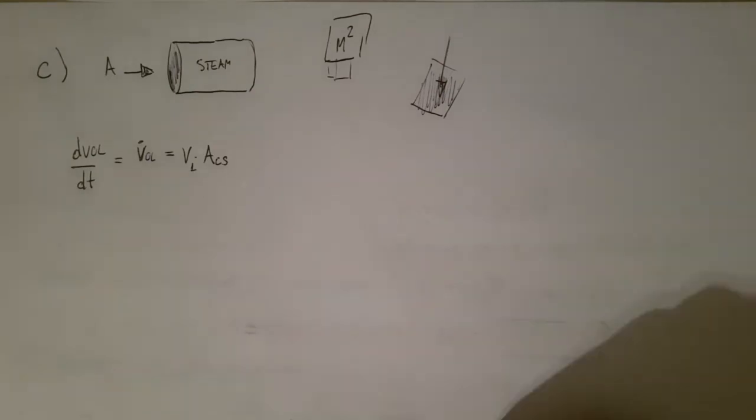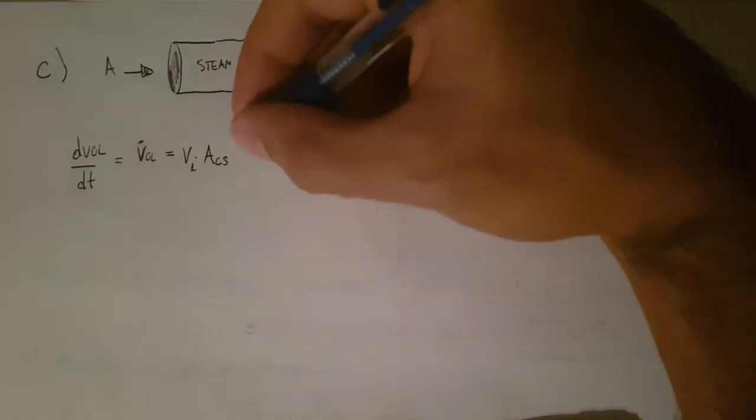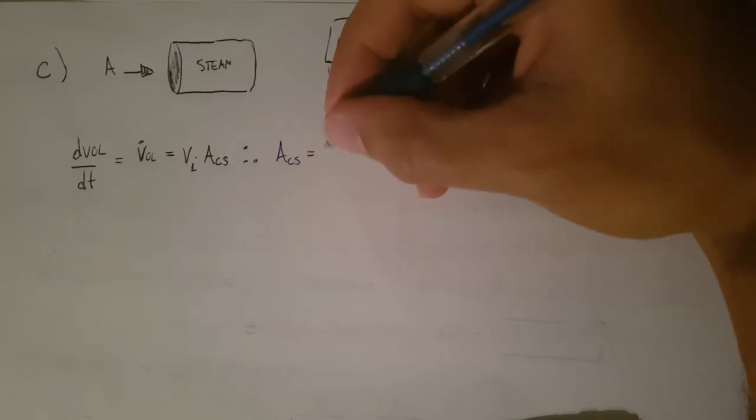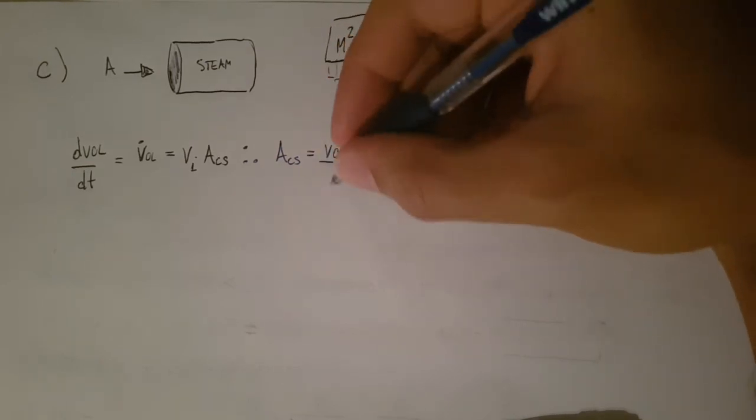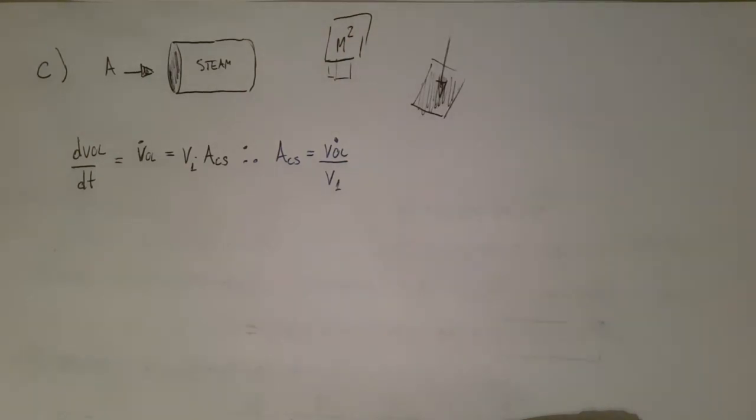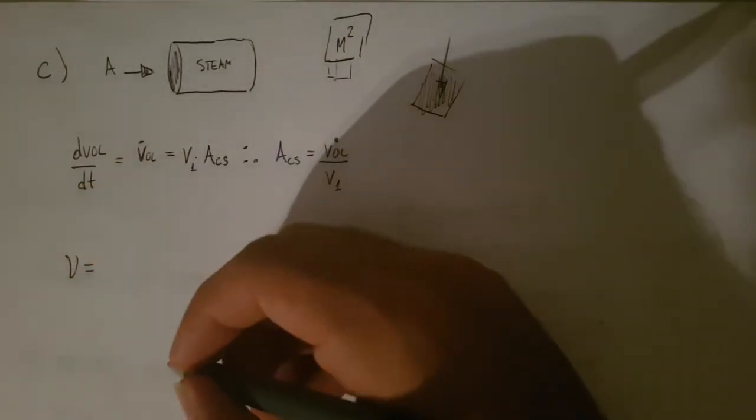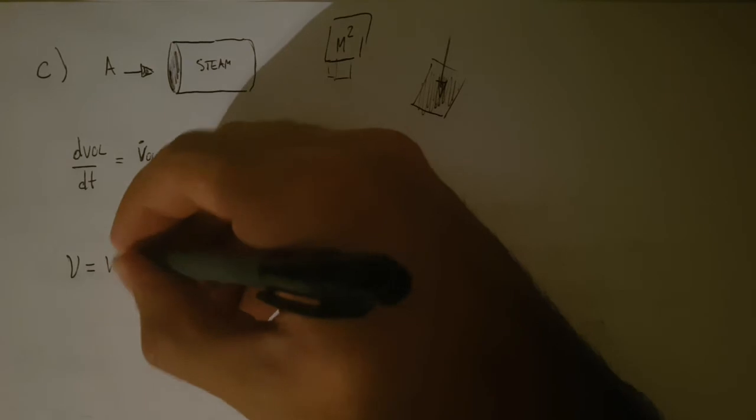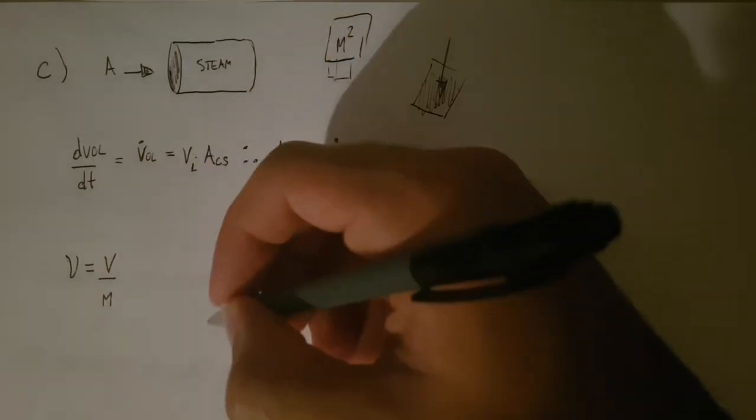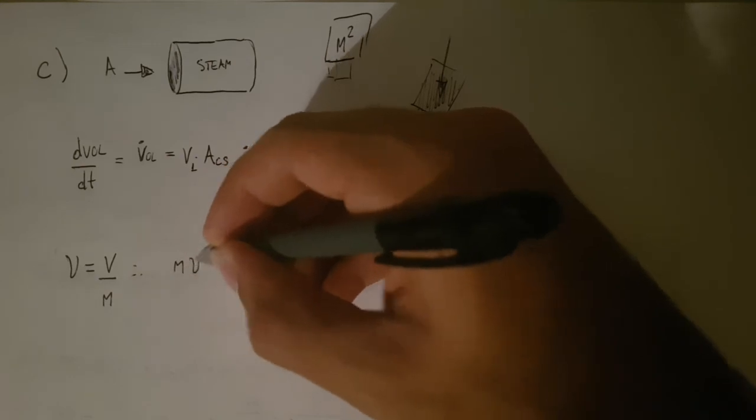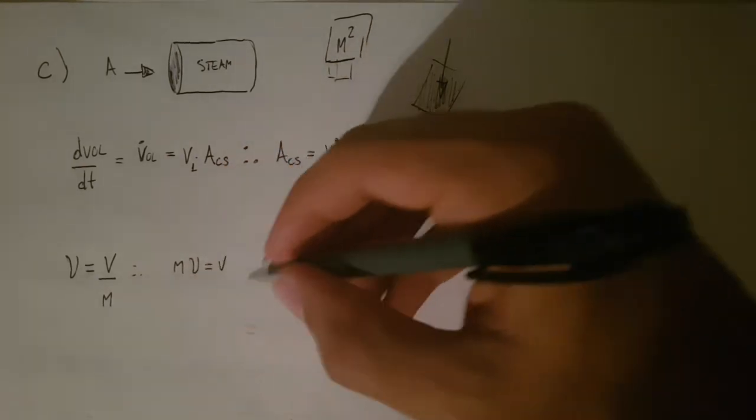So, in other words, if we want the area, we just solve for the area. So, if we want the cross-sectional area, all we need to do is grab the volume flow rate, divide that by velocity 1. Velocity 1 we have. We just need to find the volume flow rate. And we've done that in the past. It's quite easy, right? Because we know that, by definition, specific volume is just the volume divided by the mass. Just look at the unit. And therefore, mass times specific volume equals volume. Take the derivative on both sides.